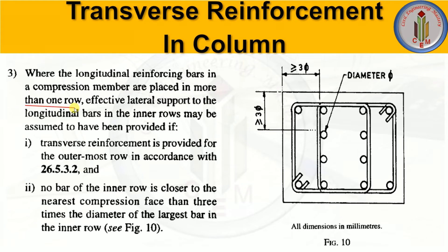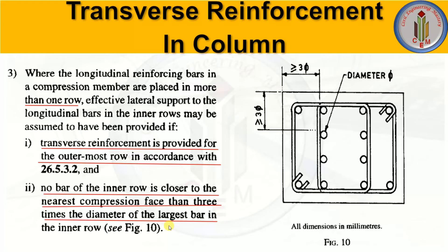Where longitudinal bars in a compression member are placed in more than one row, effective lateral support for bars in inner rows may be assumed to be provided if the transverse reinforcement is provided for the outermost row in accordance with Clause 26.5.3.2, and no bar of the inner row is closer to the nearest compression face than three times the diameter of the largest bar in the inner row.